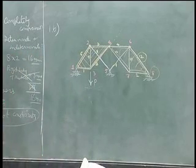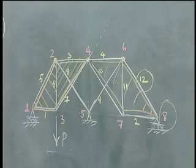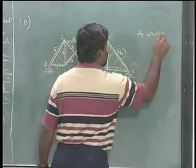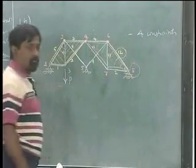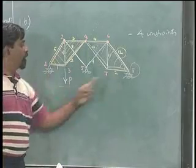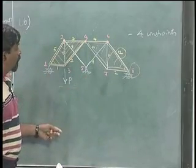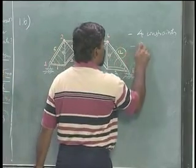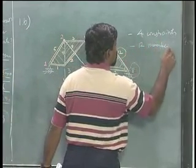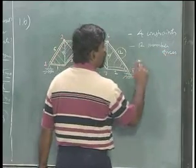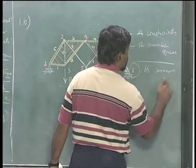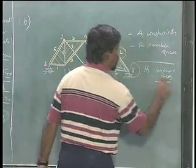Now is it possible for me to solve for all the forces, member forces and reactions? How many constraints are there? There are four constraints. One here, one here and two here. How many members are there? There are twelve members, which means there are twelve member forces which are unknowns. Therefore, I will have to find out sixteen unknown forces.